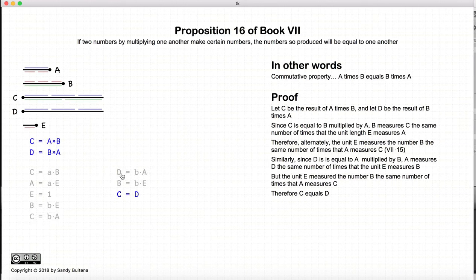And that is what we were setting out to prove: that a times b is c and b times a is d. C and d are equal, which gives us that a times b equals b times a.